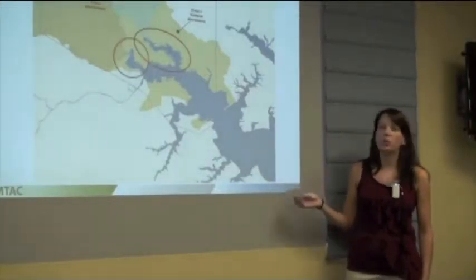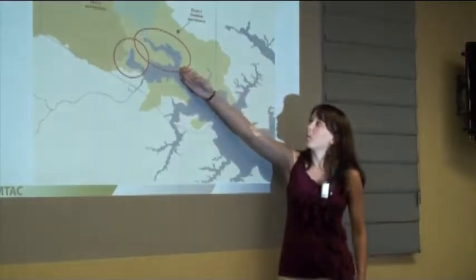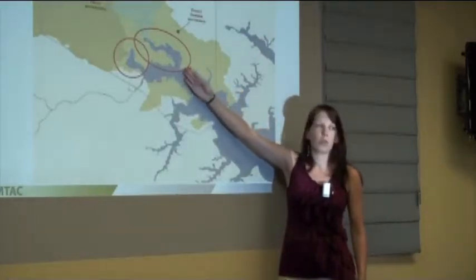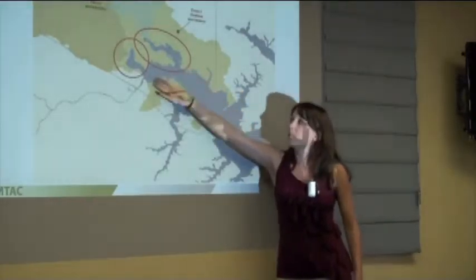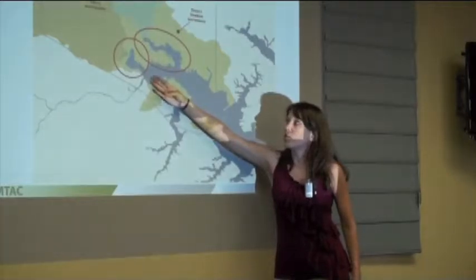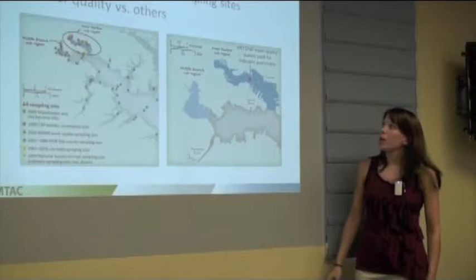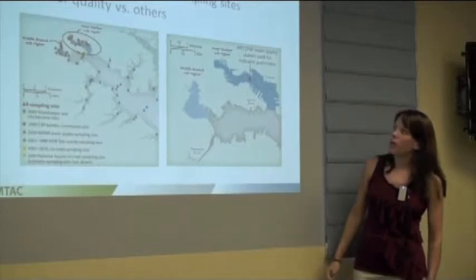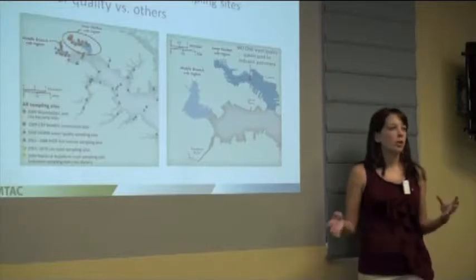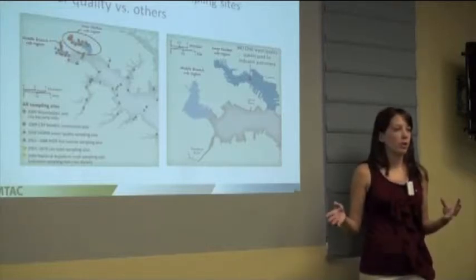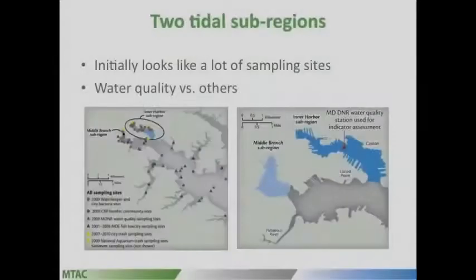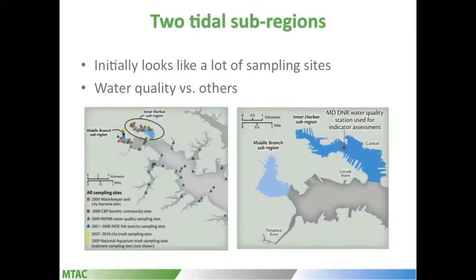So what we ended up doing was choosing the Baltimore Harbor - this entire sub-region we're going to call the inner harbor - and then this area of the middle branch. So the two sub-regions are the middle branch and inner harbor. Initially we just plotted all the sampling sites that were in these areas, and it looks like there's quite a bit for such a small area. These areas are only one to two kilometers in area.